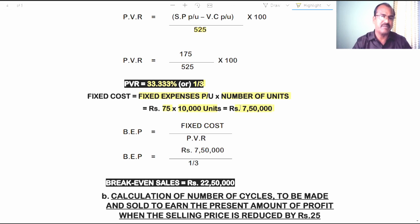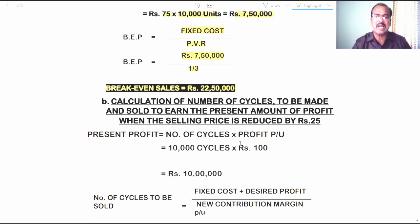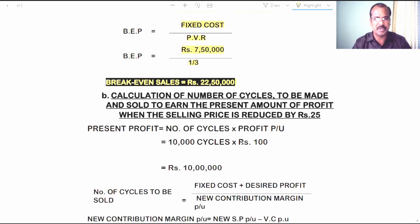That is the total fixed cost. Applying them in the formula — fixed cost divided by PVR: 7,50,000 divided by 1/3 gives us the break-even sales value of 22,50,000 rupees.